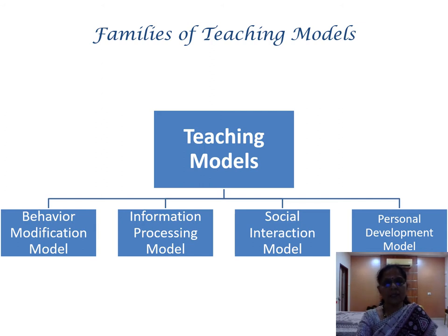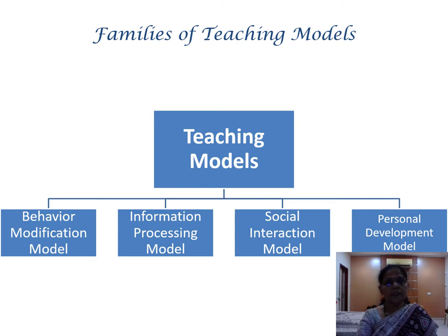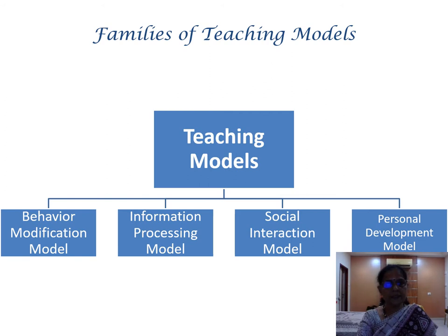Each model has a theoretical background — each model supports a theory of learning. A theory of learning explains what learning is and how it happens. The behavior modification model supports the theory of behaviorism, which explains learning as a behavior change. According to this behaviorist school of thought, learning is something that should result in a change in behavior.